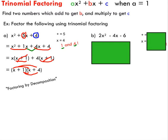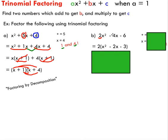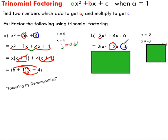When approaching factoring problems, it's important to always common factor first if possible. Looking at this next example, the a value is two, but you can common factor out two from each term. After factoring out the two, you have a trinomial inside brackets where the a value is one, so you can use the same strategy. Find two numbers that add to get negative two and multiply to get negative three — don't forget the signs. Negative three times one gives negative three, and negative three plus one gives negative two, so those are our magic numbers.